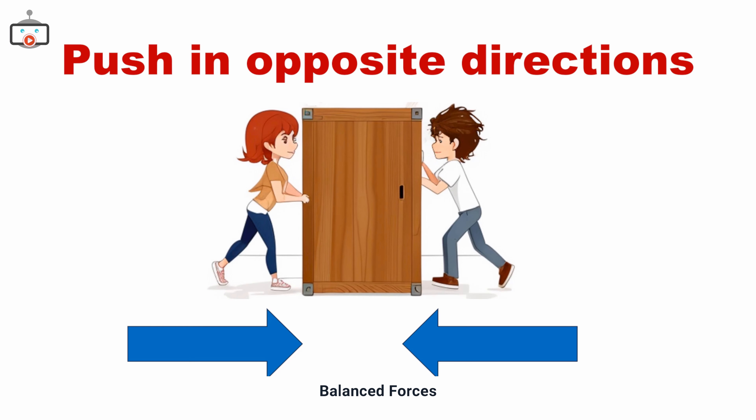If we both push this box in the same direction it moves faster. But what if we push in opposite directions? The two forces are balanced so the block doesn't move at all.